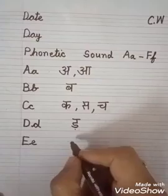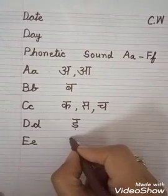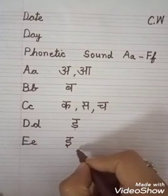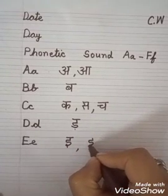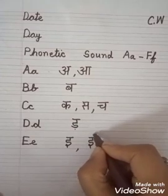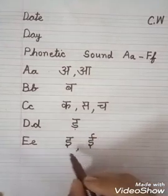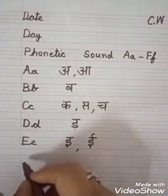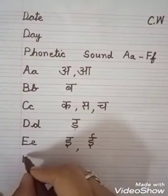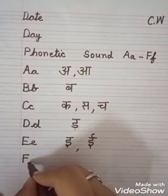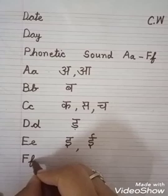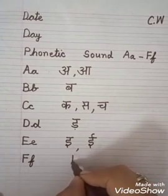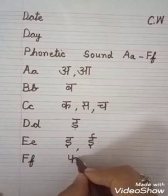Okay. E sound: E, comma, then write down ee. These are also small and big. Then write down F — F should be capital and small. Then F sound: pho.